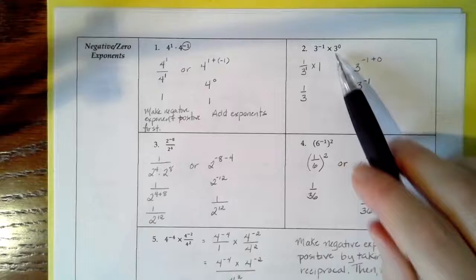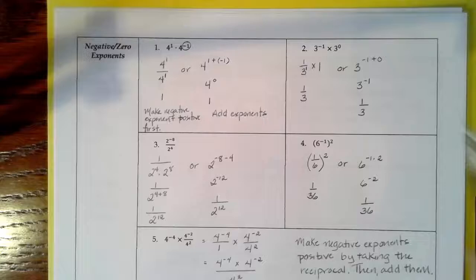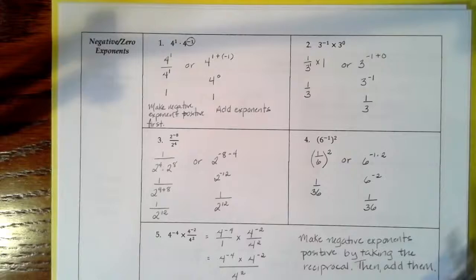Another way of doing this problem is you could use the product rule and add your exponents since you have the same base. Negative 1 plus 0 is negative 1, so it's 3 to the negative 1, and then go ahead and use our rule for negative exponents and write it as 1 third. You can use either method, whatever you're most comfortable with.